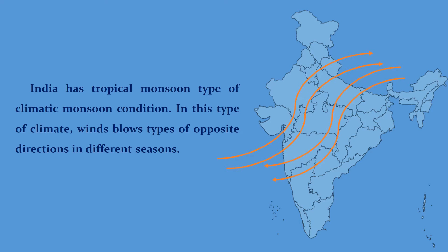In addition to this, geographically, India is situated both in tropic and temperate zones. Latitude, height from the sea level, distance from the sea, direction of the winds, mountain ranges, ocean currents, etc., are all influences on the climatic condition of the country.